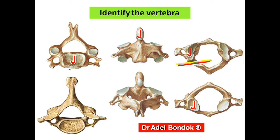The joint between the bodies of the vertebrae — via the intervertebral disc — is a secondary cartilaginous joint. The vertebral artery passes through the foramen in the transverse processes. The seventh cervical vertebra does not transmit the vertebral artery but transmits the accessory vertebral vein.